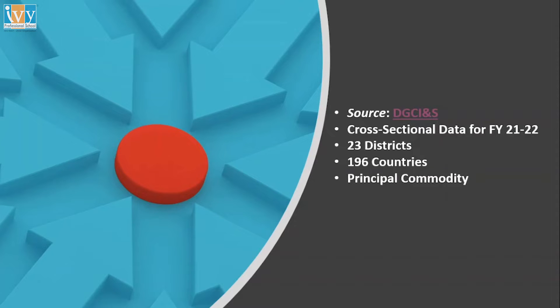We have data for principal commodity wise. We also have another option to choose HS code. Why I chose principal commodity, we will discuss later on. We have 164 such principal commodities in which we worked on this data.